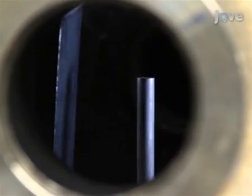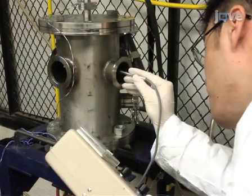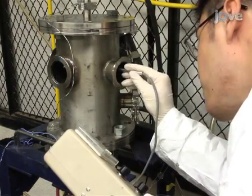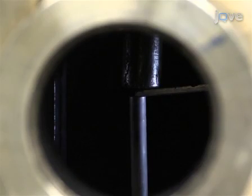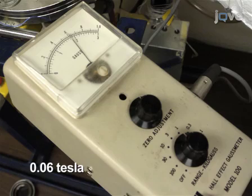Attach the molybdenum sheet to one side of the permanent magnet and turn this side towards the electrodes. Using a gauss meter, measure the magnetic field in the inter-electrode gap. Keep the average magnetic field between the electrodes at about 0.06 tesla.